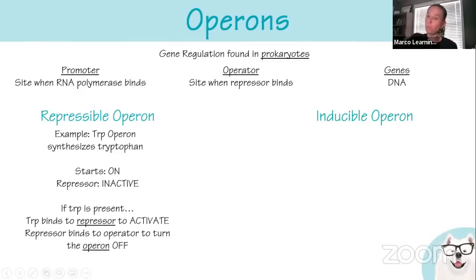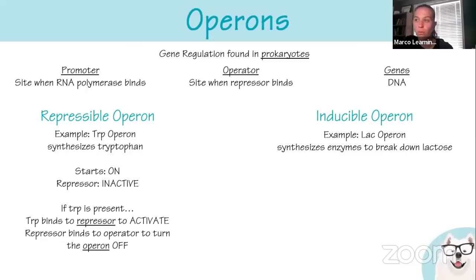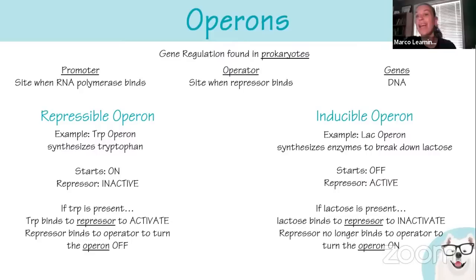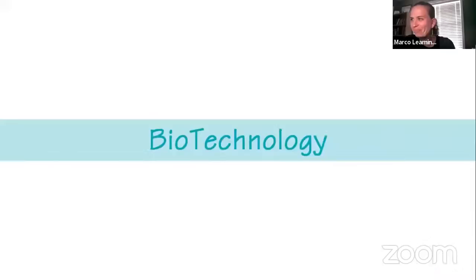The inducible operon example is the lac operon, which synthesizes enzymes to break down lactose. It starts out off because the repressor is active. When lactose is present, lactose binds to and inactivates the repressor, causing it to fall off the operator. Now RNA polymerase can bind to the promoter and synthesize the enzymes needed to break down lactose. So the inducible operon starts off and gets turned on — it is induced.